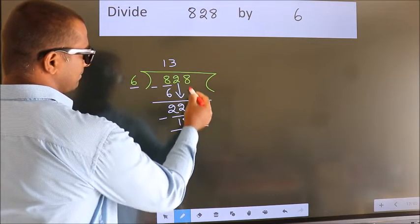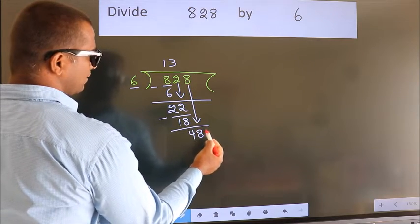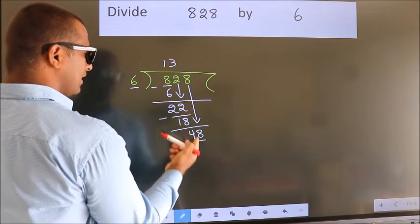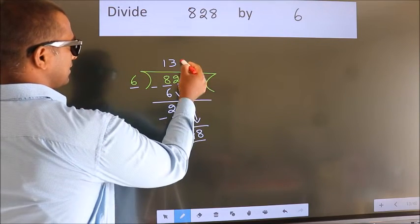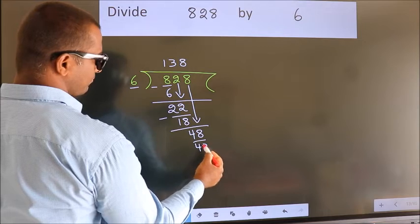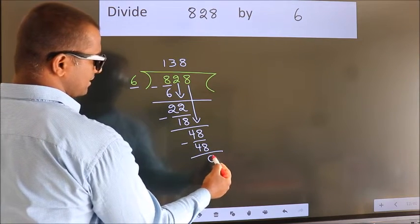After this, bring down the beside number. So 8 down. So 48. When do we get 48 in the 6 times table? 6 eights, 48. Now we subtract. We get 0.